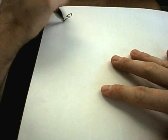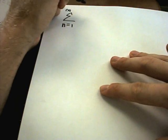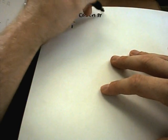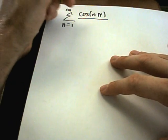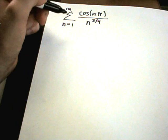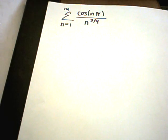So here we have the example. Cosine of n times pi divided by n to the 3 fourths. And again, this is one of those series that certainly doesn't look like an alternating series at the very beginning.